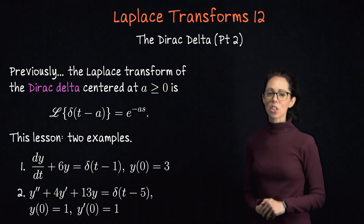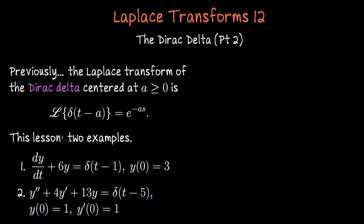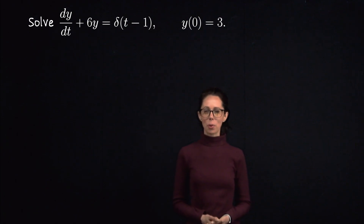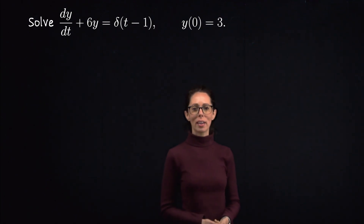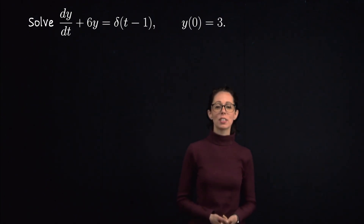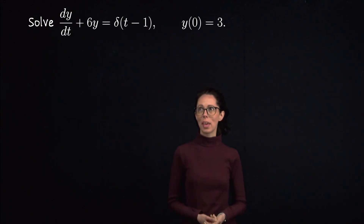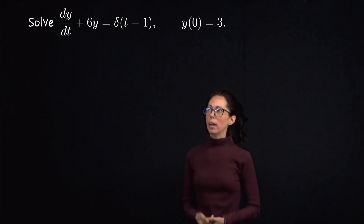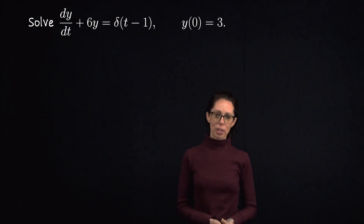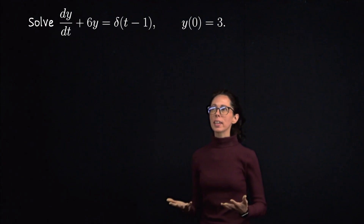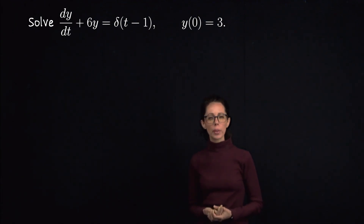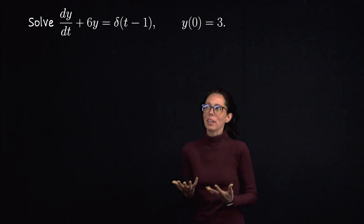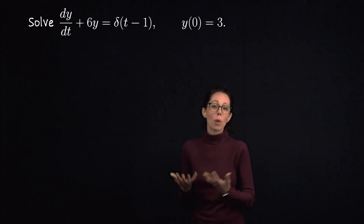Let's get started with this first-order example. Our first example is y' plus 6y equals the Dirac delta shifted to t equals 1, so delta of t minus 1. We have an initial condition that when t equals 0, our position function is at 3 units. We're going to take the Laplace transform to solve this. But before we do that, let's talk over what we should expect the solution to look like, because we can actually anticipate from this expression what we're going to find.